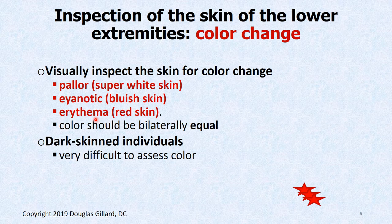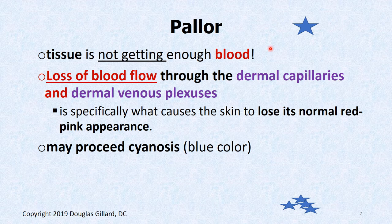That's a sign of a DVT if one leg is erythemic and one is not. Or things like chronic regional pain syndrome, which is rare but can happen. Dark-skinned individuals are kind of tough to assess. Pallor is like a ghost-like color — it means the tissue is not getting enough blood flow. Loss of local blood flow specifically through the dermal capillaries means the dermis is not supplied with blood, and your skin starts to become kind of white looking.